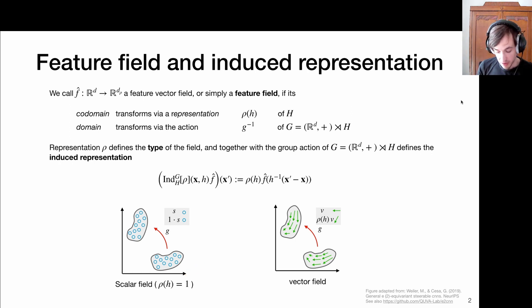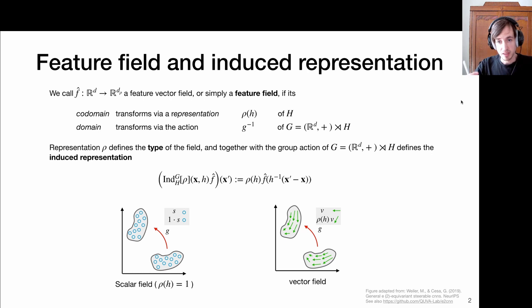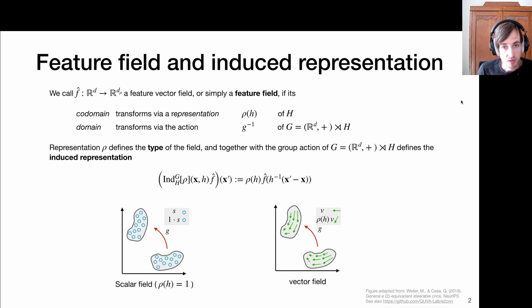Intuitively, I can also have a vector field. These green arrows could, for example, represent the direction of wind if you look at a map, or some force field or velocity field. Obviously, if this field as a whole rotates, then these vectors need to rotate accordingly. So if I want to transform a vector field, I need to transform its domain via the action of G, and I also need to transform its co-domain via the action of H, which could be the rotation group acting on these vectors.